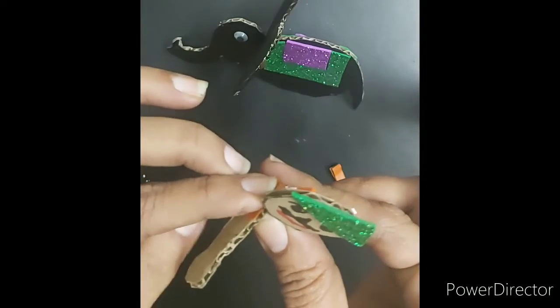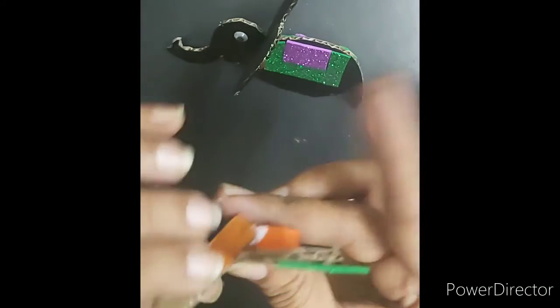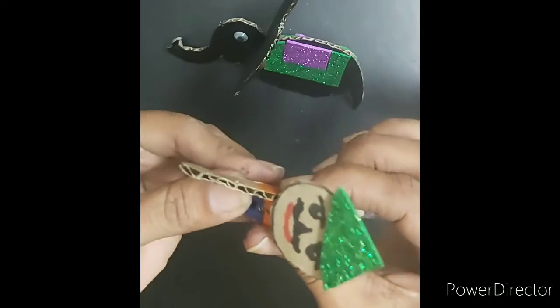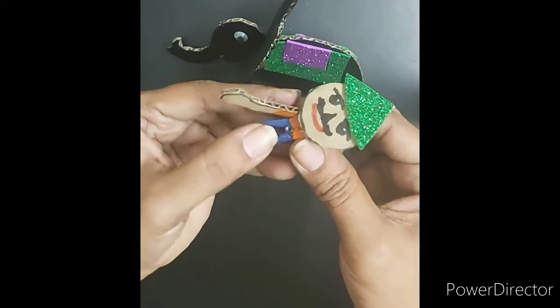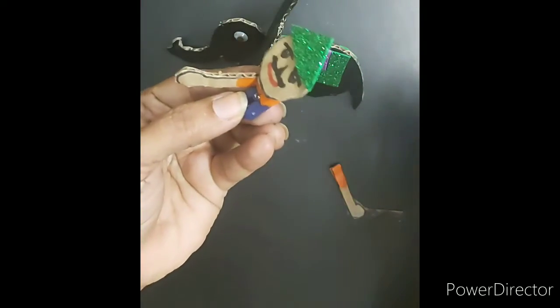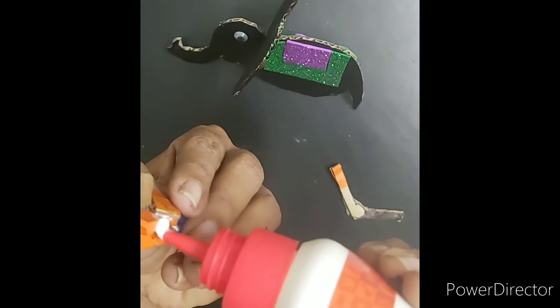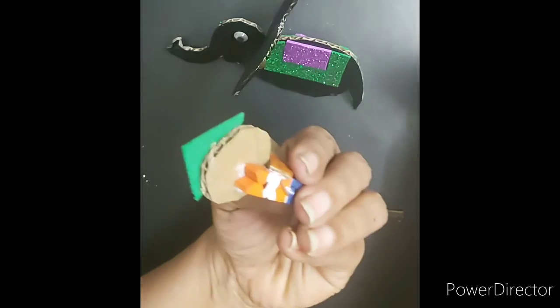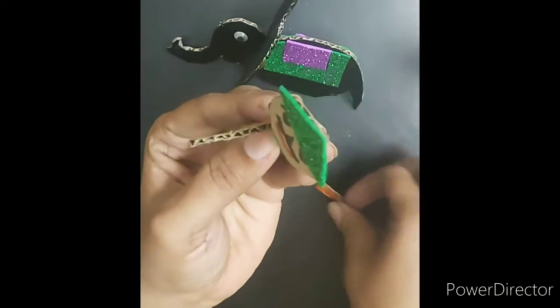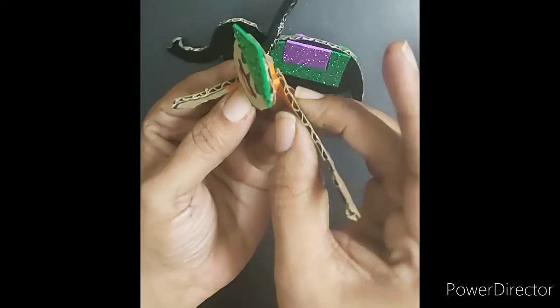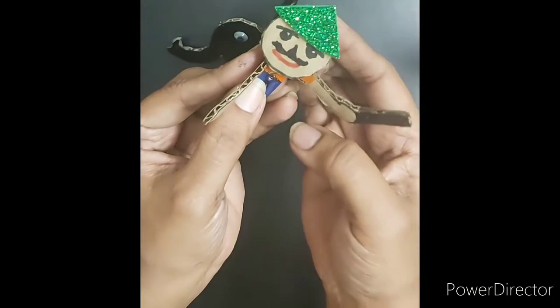You can alternately use glue guns also so that the process is faster. And for the other arm attach it to the back side. Back side. Because he's going to have a stick. So I'm just attaching to the back side like this.